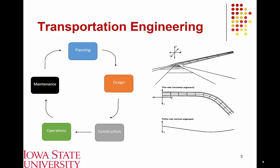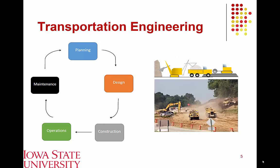Once a project is determined to be necessary, we go through a design process. A general example is horizontal and vertical alignment — designing how curves align on a roadway. Once design is completed, the facility is actually constructed. Much of this is covered in complementary construction engineering classes, but we'll discuss how construction fits into the bigger picture.